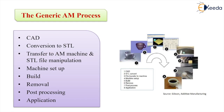To produce a 3D model by layer-oriented AM processes, the 3D CAD solid must be methodically split into the same layers as those produced physically — this is called slicing. There are basically two methods of doing this: slicing by triangulation, which leads to the STL format, and direct cutting in the CAD system, which leads to the CLI or SLI format.